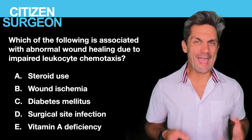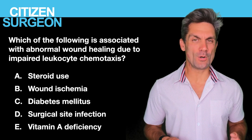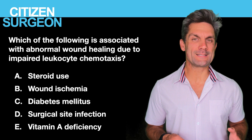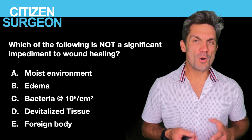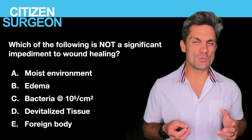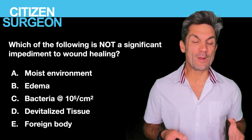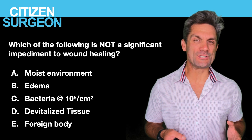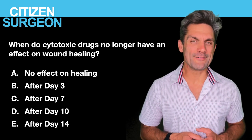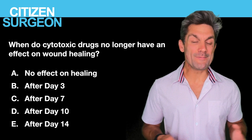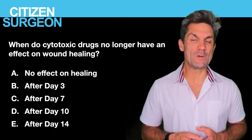Question eight: which of the following is associated with abnormal wound healing due to impaired leukocyte chemotaxis? Is it steroid use, wound ischemia, diabetes mellitus, surgical site infection, or vitamin A deficiency? Question nine: which of the following is not an impediment to wound healing? Is it a moist environment, edema, a wound bacterial load count of greater than 10 to the five per centimeter squared, devitalized tissue, or a foreign body? Question ten: when do cytotoxic drugs no longer have an effect on wound healing? Is it that they have no effect at all, after day three, after day seven, after day ten, or after day fourteen?